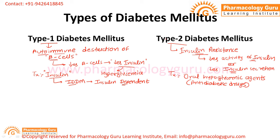All anti-diabetic drugs are considered for the treatment of Type 2 diabetes mellitus. Earlier they were called oral hypoglycemic agents, but now some subcutaneous drugs like GLP-1 analogues are also used and they are not given orally. So now they are referred to as anti-diabetic drugs. Type 2 is called NIDDM — Non-Insulin Dependent Diabetes Mellitus — because insulin is not the first choice of therapy.